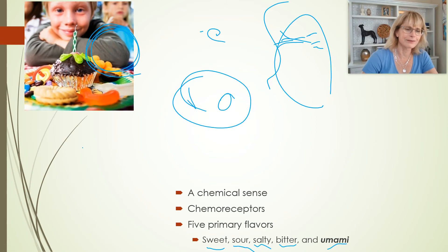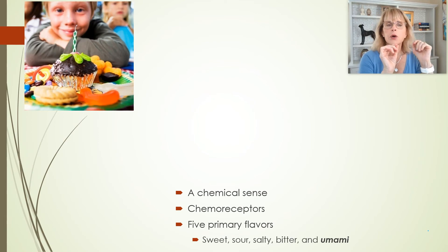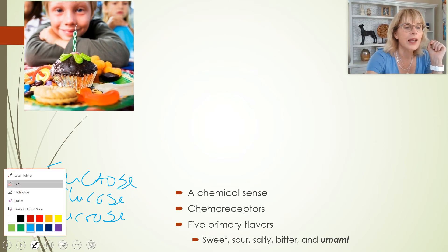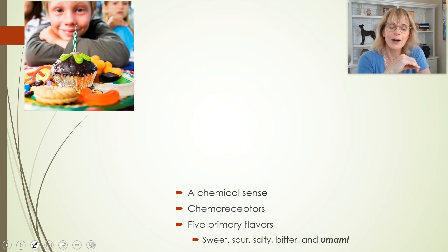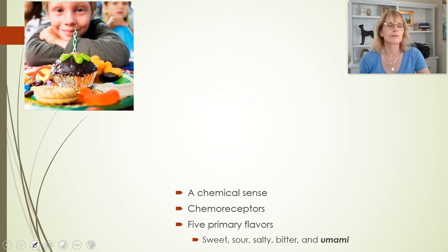Sweet is the taste of sugar. Mostly for humans, we really like the taste of glucose and sucrose, but our favorite sweetness is fructose. Artificial sweeteners are chemicals that bind to the same receptor that glucose, fructose, or sucrose binds to, but activate it extra and have no calories. That's how artificial sweeteners work — you can think of them as sugar receptor agonists.